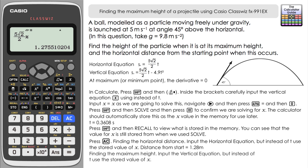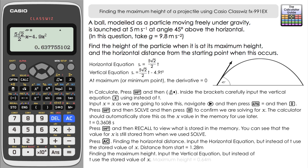Now let's find the maximum height — the vertical distance. The first part of the vertical equation is the same as the horizontal, so press left to reuse that input, then add minus 4.9 times x squared. Press equals and we get 125/196. Pressing SD gives 0.64 metres to two decimal places — that's the maximum height the ball will reach.